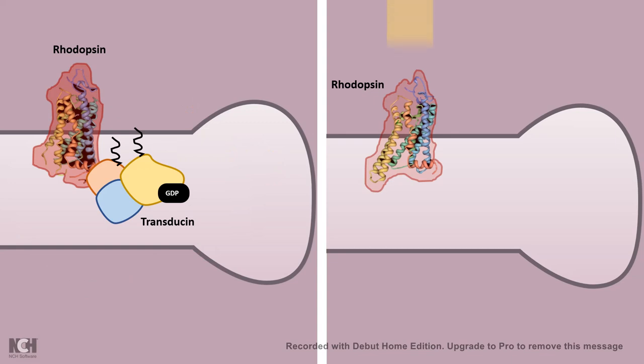After hitting the light, the external helices of rhodopsin get tilted. As a result, there is an opening of a site in which the transducin can get interaction. And what happens is in the transducin, there is hydrolysis of GTP and there is an exchange of GTP.